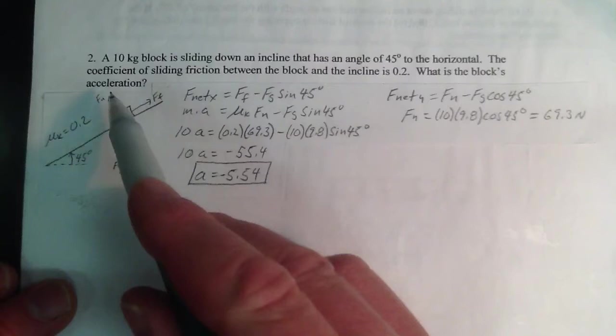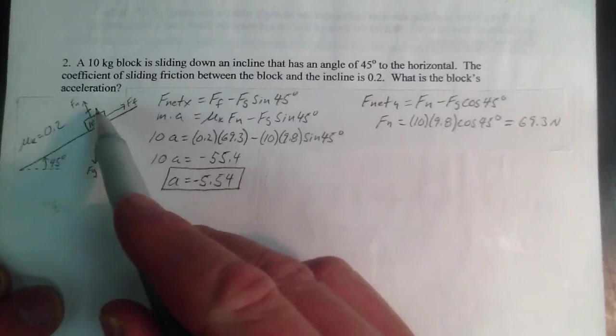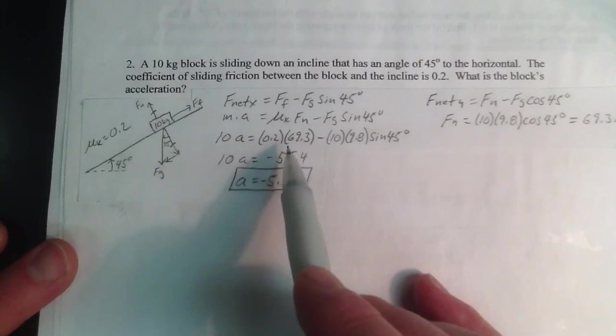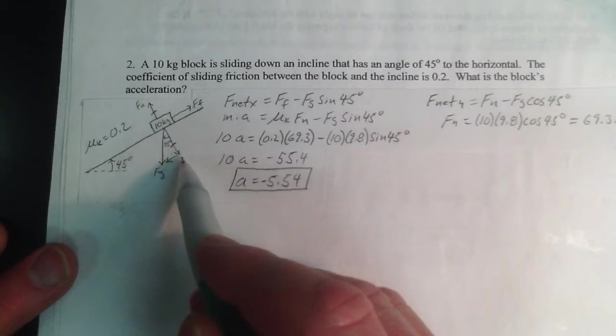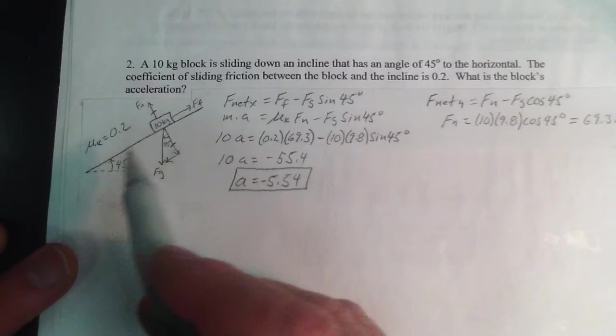Your first move is you're always going to be in equilibrium perpendicular to the plane, and we can solve for force normal. This vector and this vector are going to be equal. Once I have force normal, I can get force friction. When I do my calculations here, you notice that this vector is going to be less than this vector. Therefore, it's going to accelerate in the direction of the larger vector, down the incline.